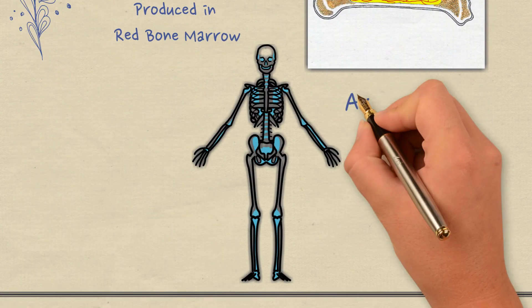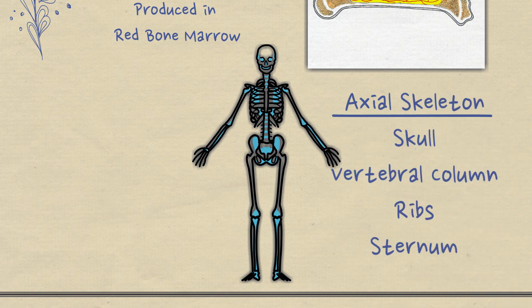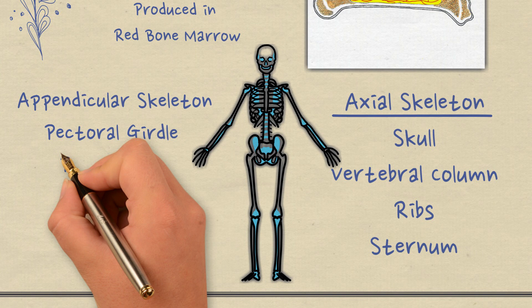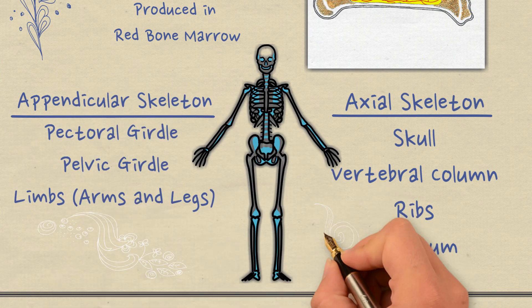The axial skeleton is made up of the skull, the bones of the vertebral column, the ribs and the sternum. The appendicular skeleton is made up of the pectoral and pelvic girdle and the bones of the arms and the legs.